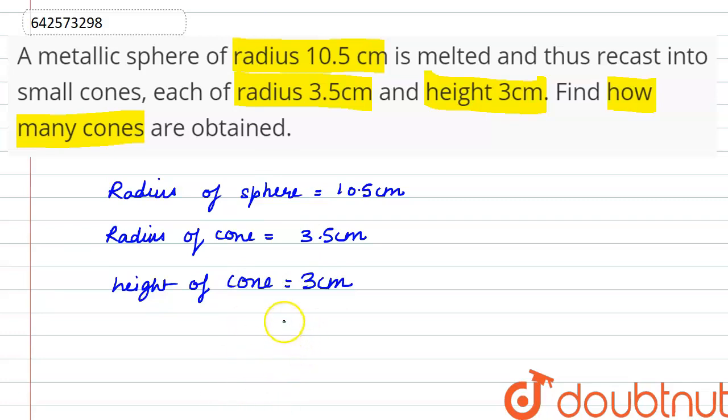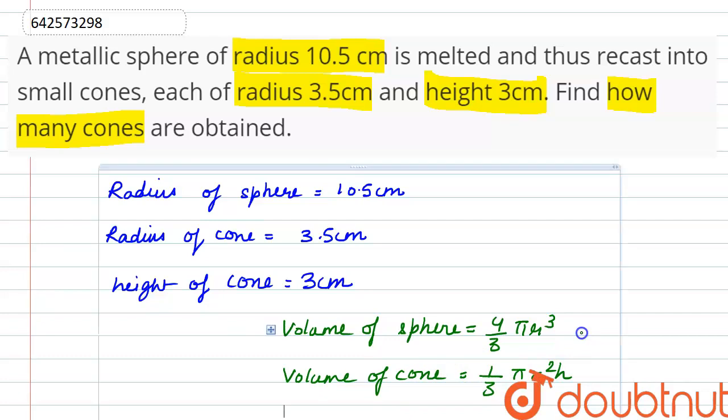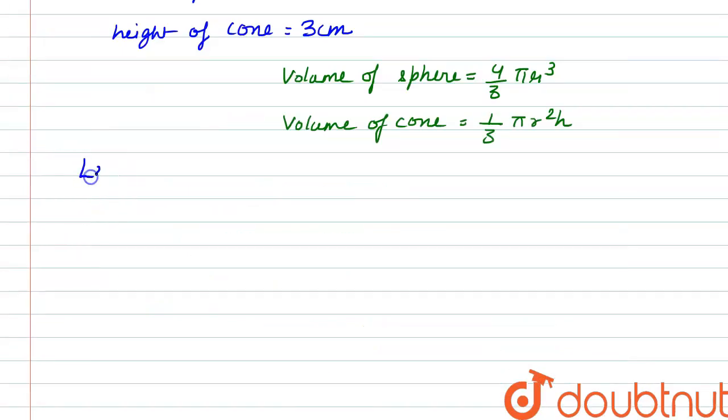We know that the formula for the volume of a sphere for any radius r is 4 by 3 pi r cube and the formula for the volume of a cone is 1 by 3 pi r square h. So let n be the number of cones formed.